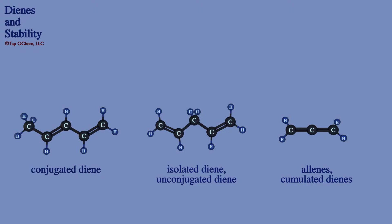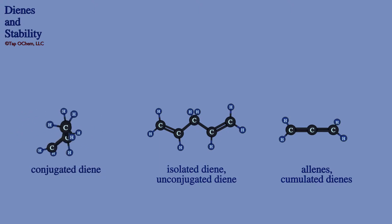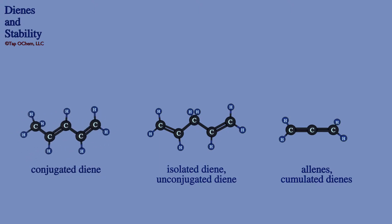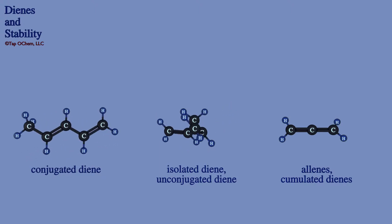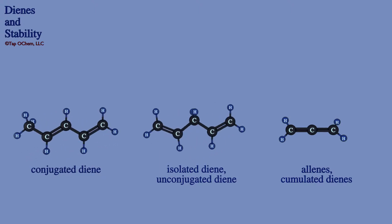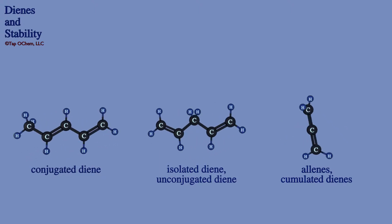Welcome to this discussion on dienes and diene stability. On the screen, there are three types of dienes represented: a conjugated diene, an isolated diene, and an allene.